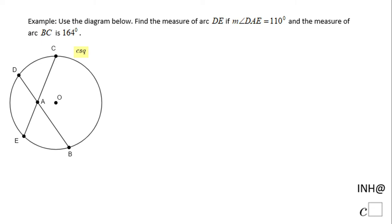Welcome back, and I need help at C squared. In this example we have a diagram. We need to find the measure of arc DE, which is this arc, if the measure of angle DAE, which is this angle, is 110 degrees, and the measure of arc BC, which is this arc, is 164 degrees.